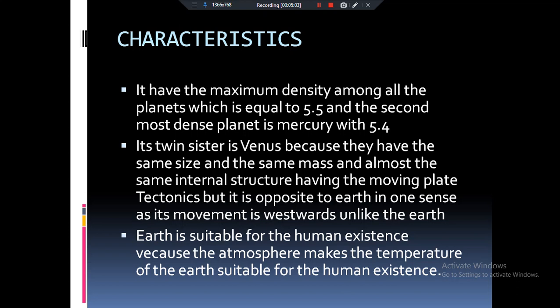Now coming to the twin sister of the earth. Why Venus is known as the twin sister of the earth? Actually the size and the mass of the Venus and earth are almost the equal and also both are the terrestrial planets. That's why they have the rocky core. They have huge amount of residual energy because of which the volcanism takes place on the surface of these planets.